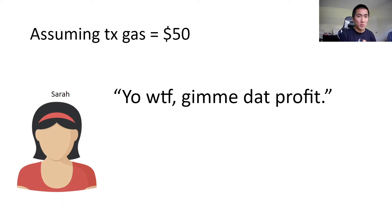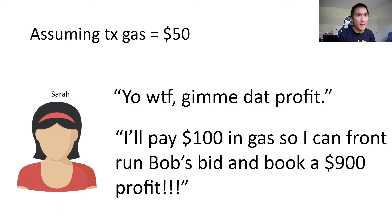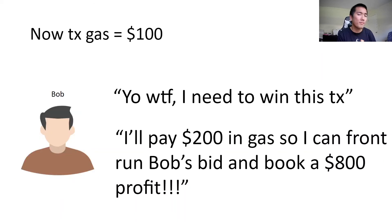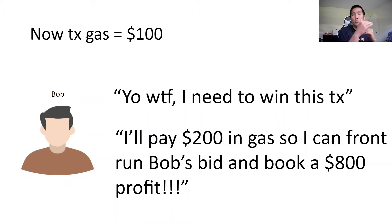In a free market, Bob can't just keep doing this forever. Other market participants like Sarah are going to say they want a part of that profit. Sarah will pay $100 in gas to front-run Bob's bid and book a $900 profit. Then Bob says he'll bid $200. As you can see, this starts a gas bidding war between arbitragers and market participants to capture arbitrage, and the profit opportunity for these arbitragers just goes down.